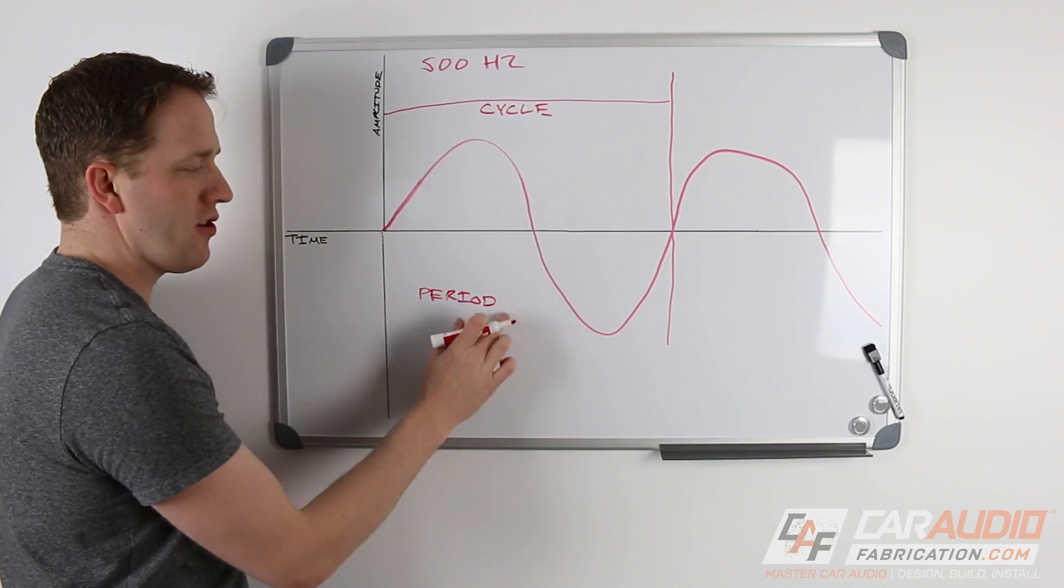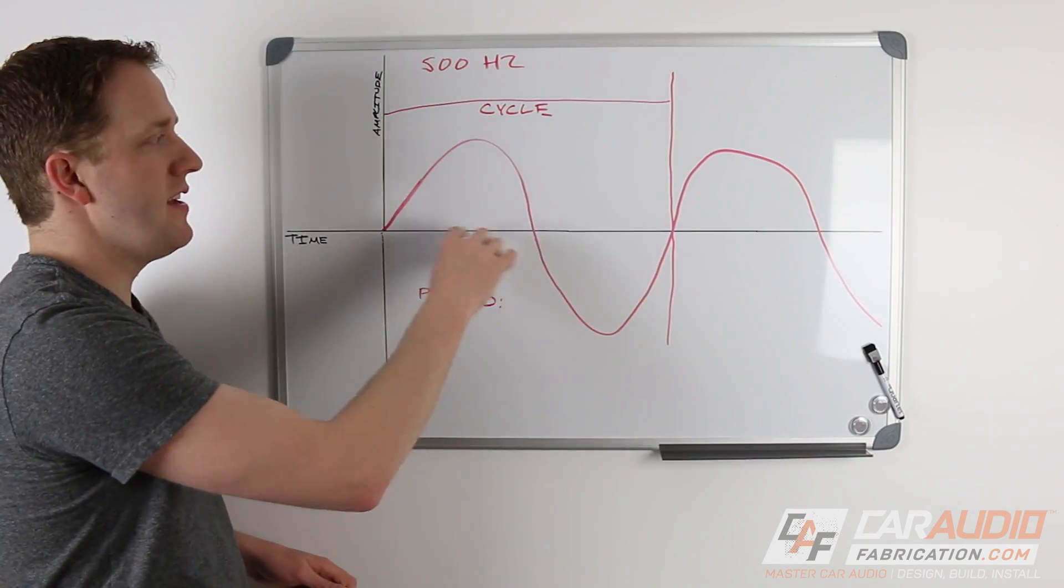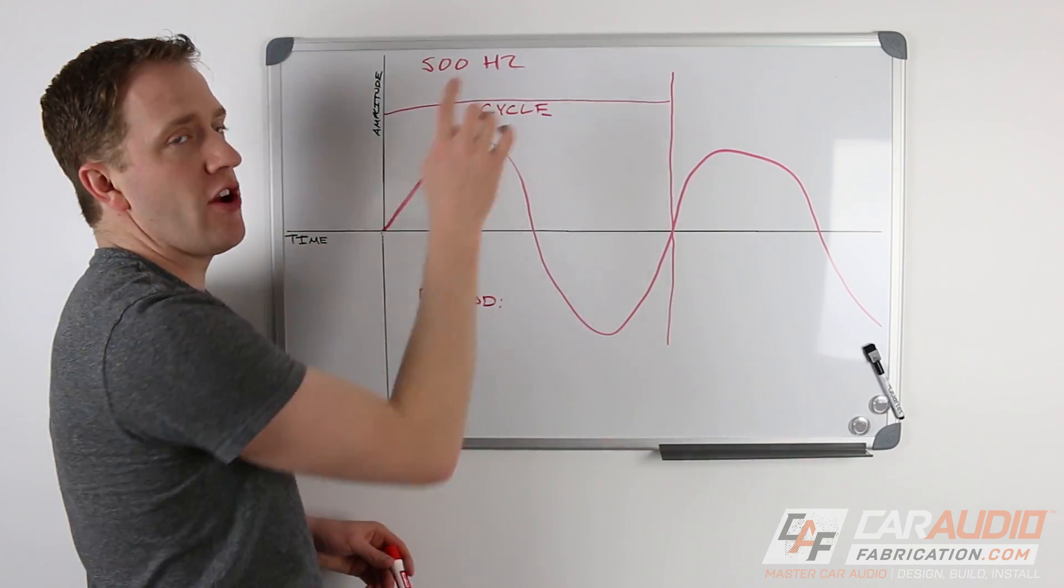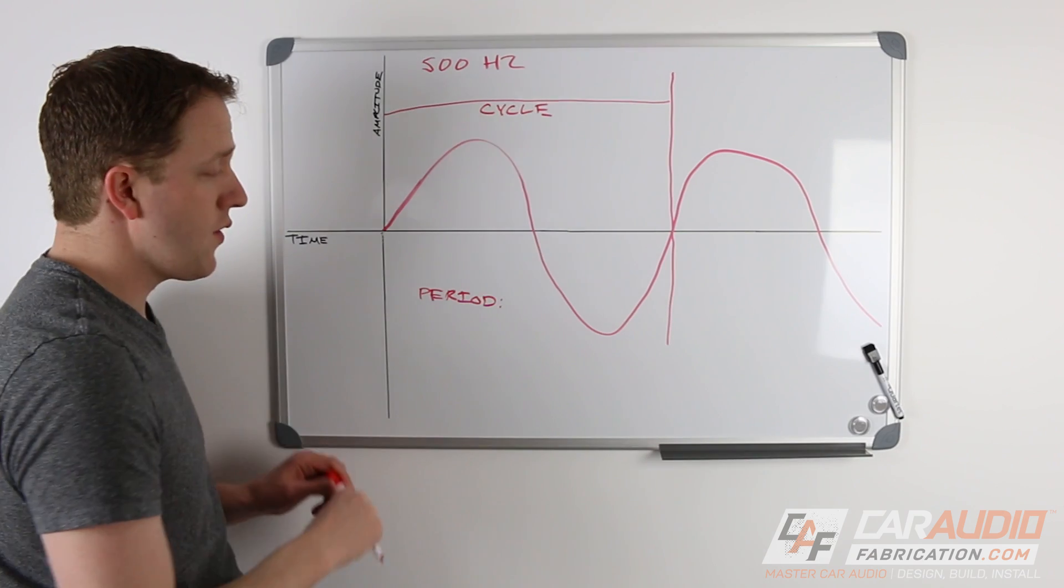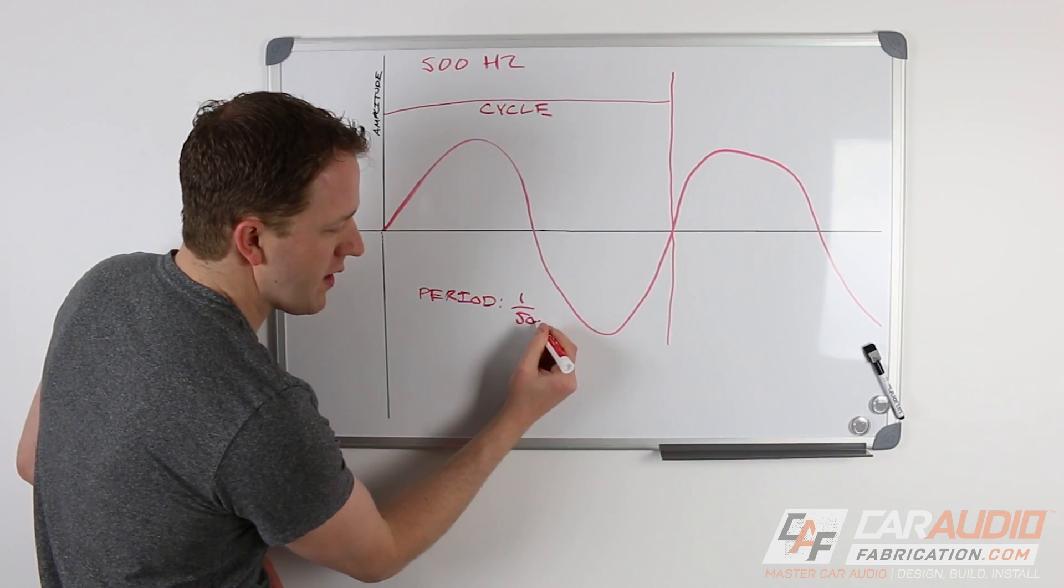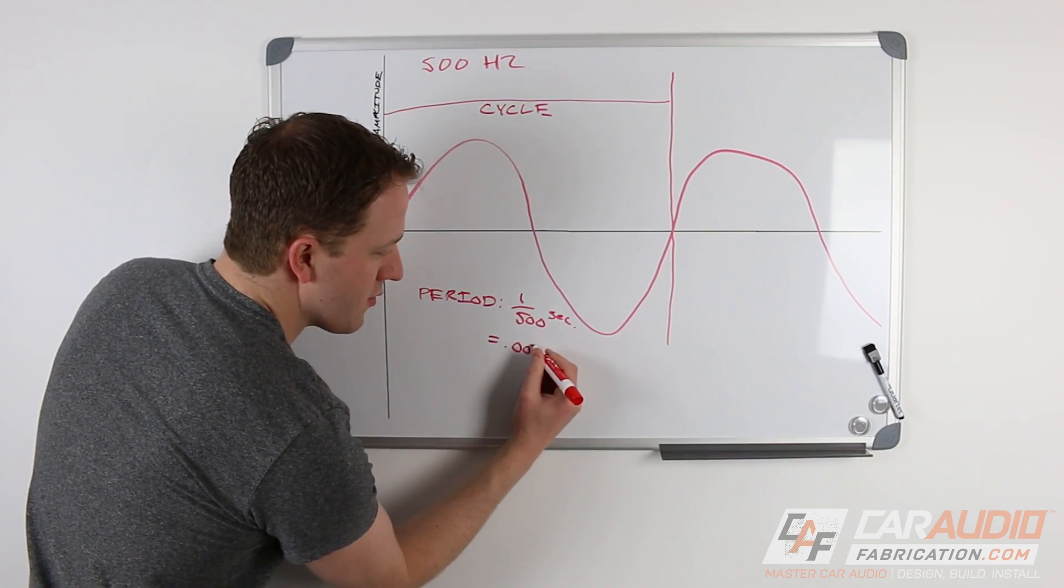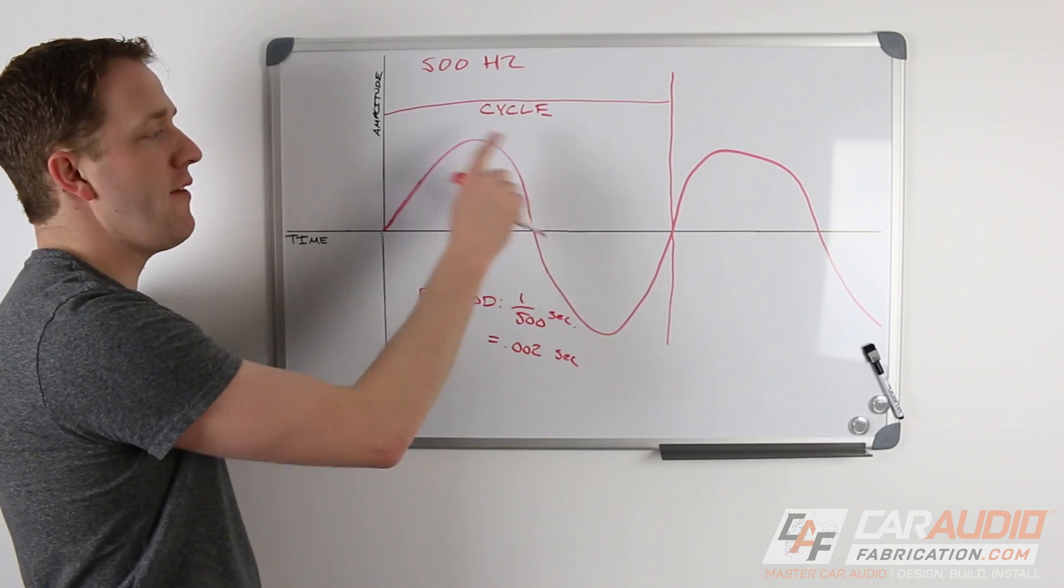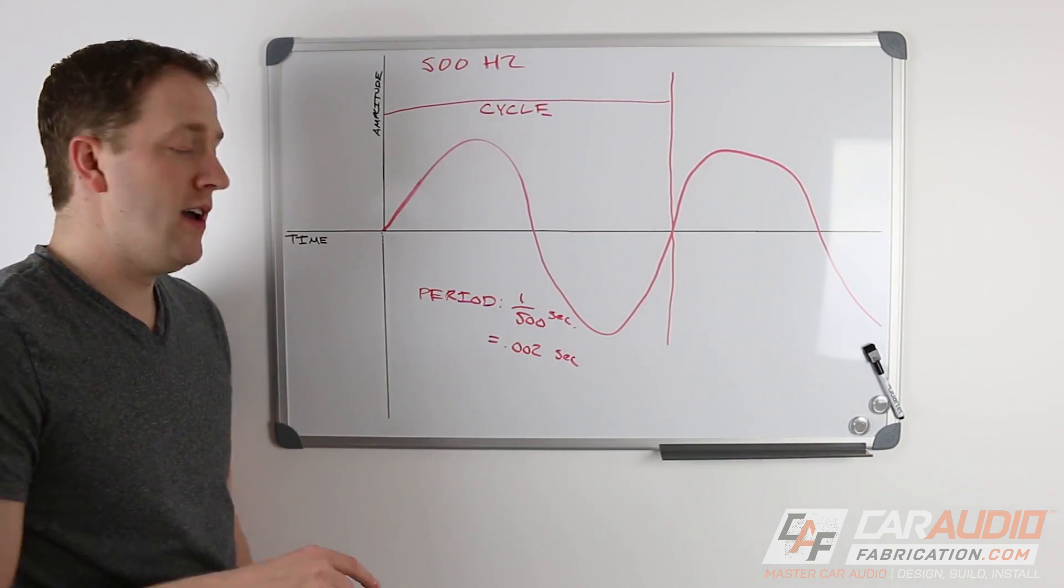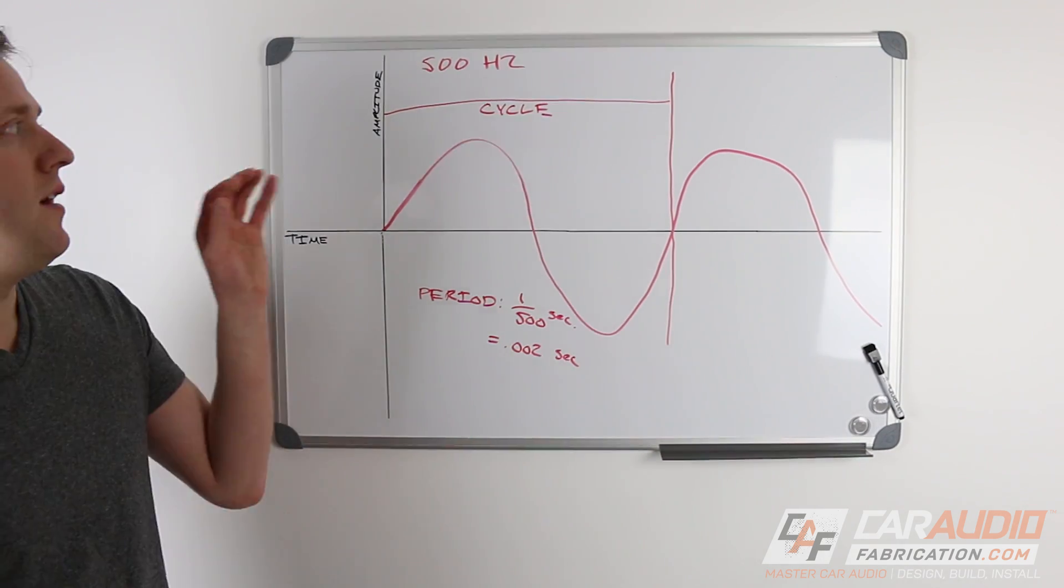Now maybe you guys have heard the term period. So a period is the amount of time that it takes for a sine wave to complete one cycle. So we know that we're doing 500 hertz or 500 cycles a second. So in that case, our period is one five hundredth of a second. One five hundredth is equal to 0.002 seconds. So when we're playing a 500 hertz sine wave through a speaker, the speaker actually completes a full cycle within 0.002 seconds. So obviously it's a very, very quick.